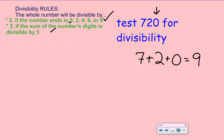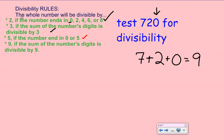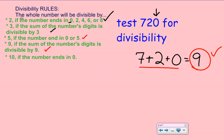Looking at the next rule — divisibility by 5: does this number end in a 0 or 5? Yes, it ends in a 0, so it is divisible by 5. Next, check for divisibility by 9: is the sum of the digits divisible by 9? The sum is 9, and 9 divided by 9 is exactly 1, so 720 is divisible by 9. And finally, is it divisible by 10? The last digit is a 0, so it fits our rule. We would say that 720 is divisible by 2, 3, 5, 9, and 10.